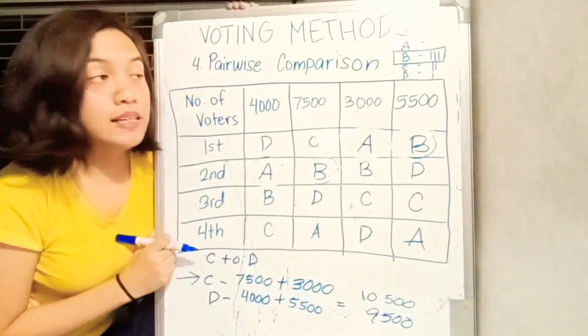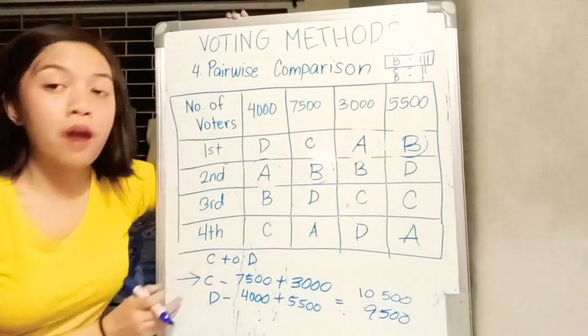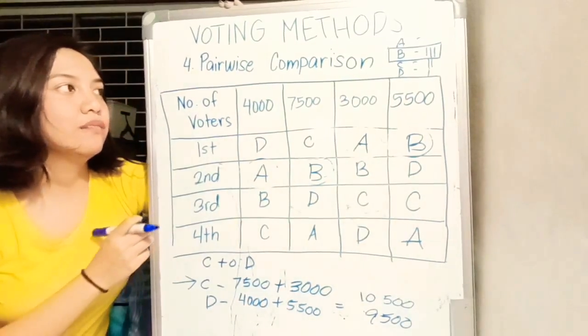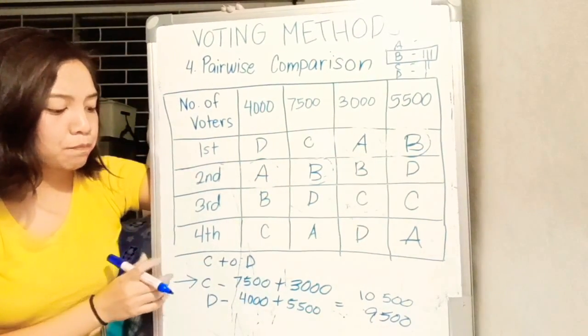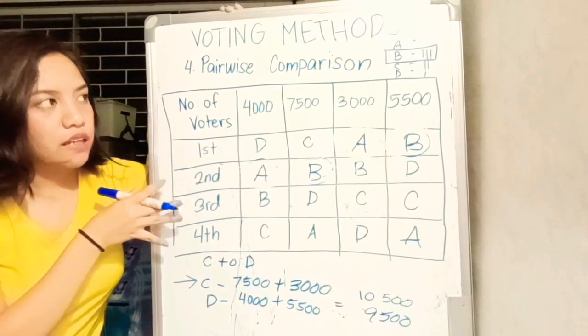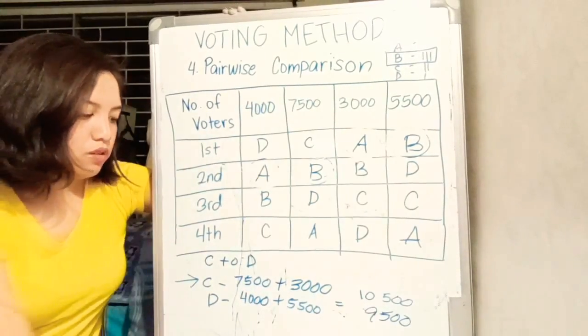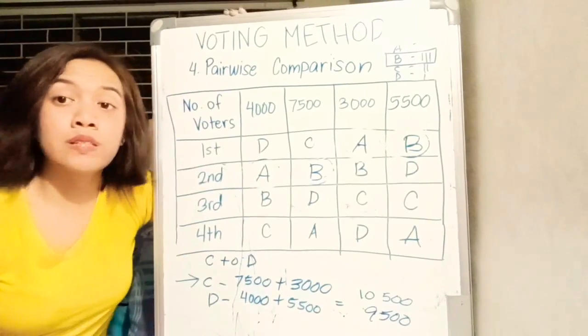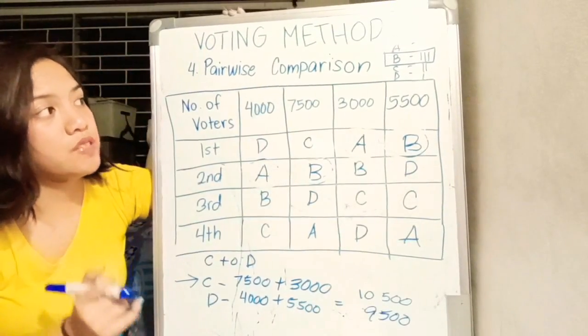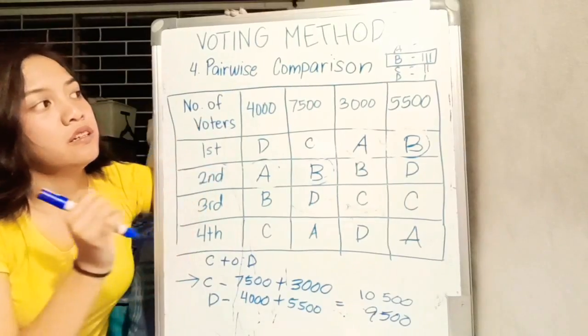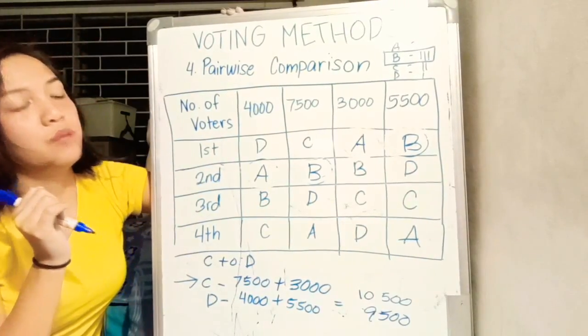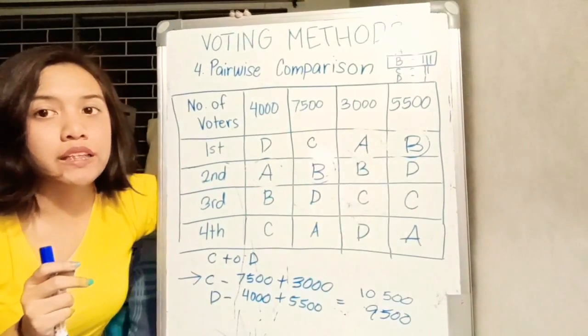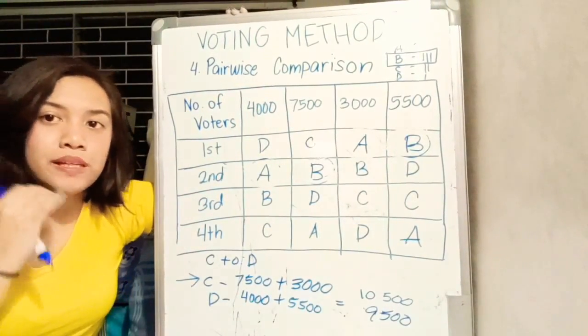It's easy to understand yung pairwise comparison. You just need a lot of time and, syempre, tsaga din para makapag-solve kasi these are 4 candidates and you compared them to each other. 6 comparisons yan. And out of 6, 3 votes napunta kay letter B.